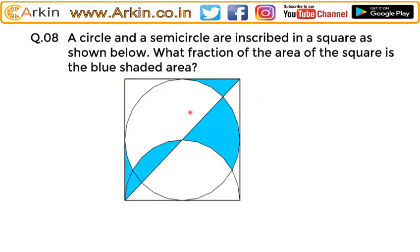In this question, a circle and a semicircle are inscribed in a square, and the question is: what fraction of the area of the square is the blue shaded area? In this type of question, most of the time you have to readjust the areas to make it easy. If you make a diagonal line and then another diagonal, you can clearly see that all parts are identical.